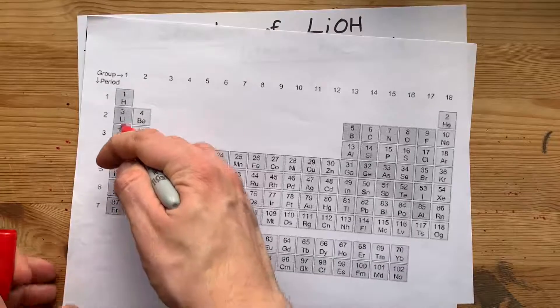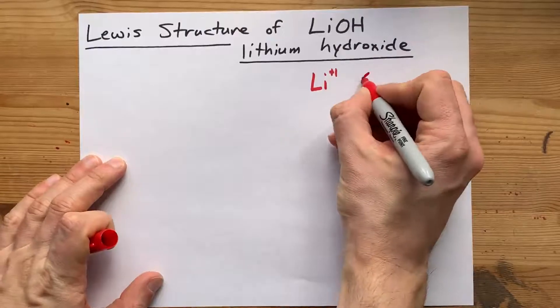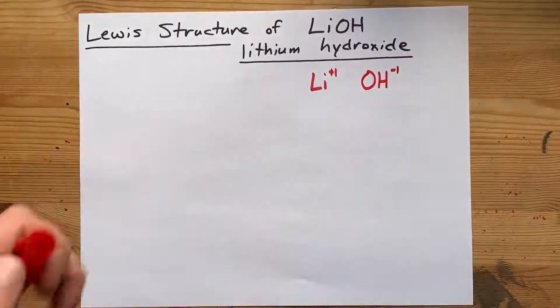All of these metals here want a charge of plus one. But in addition, the hydroxide ion you've probably memorized is OH with a minus one charge.